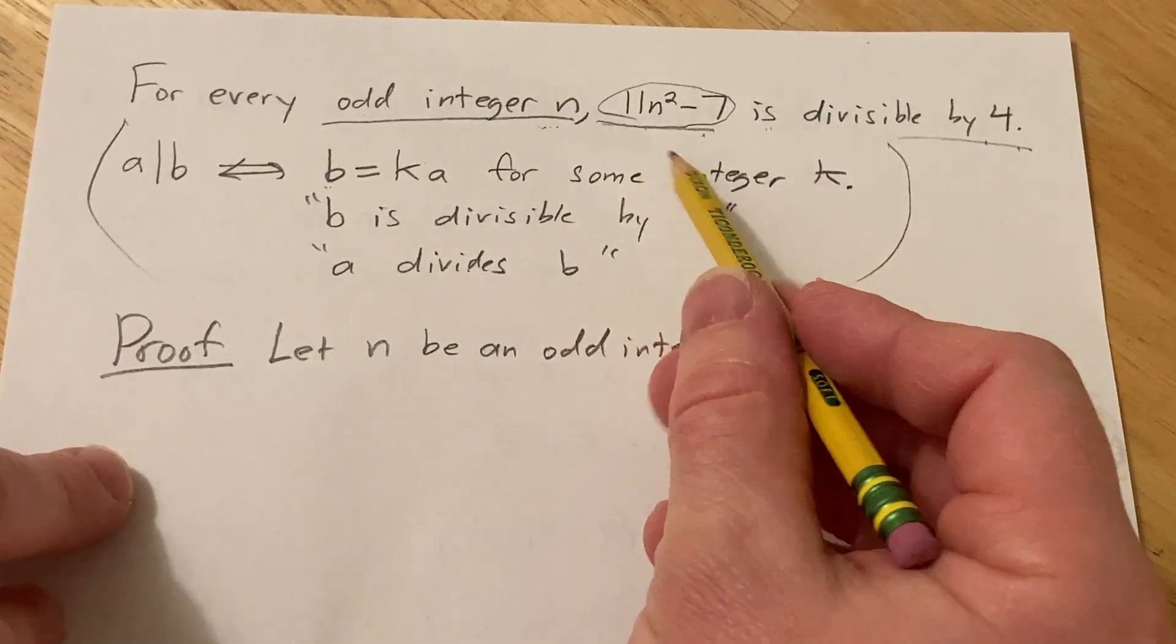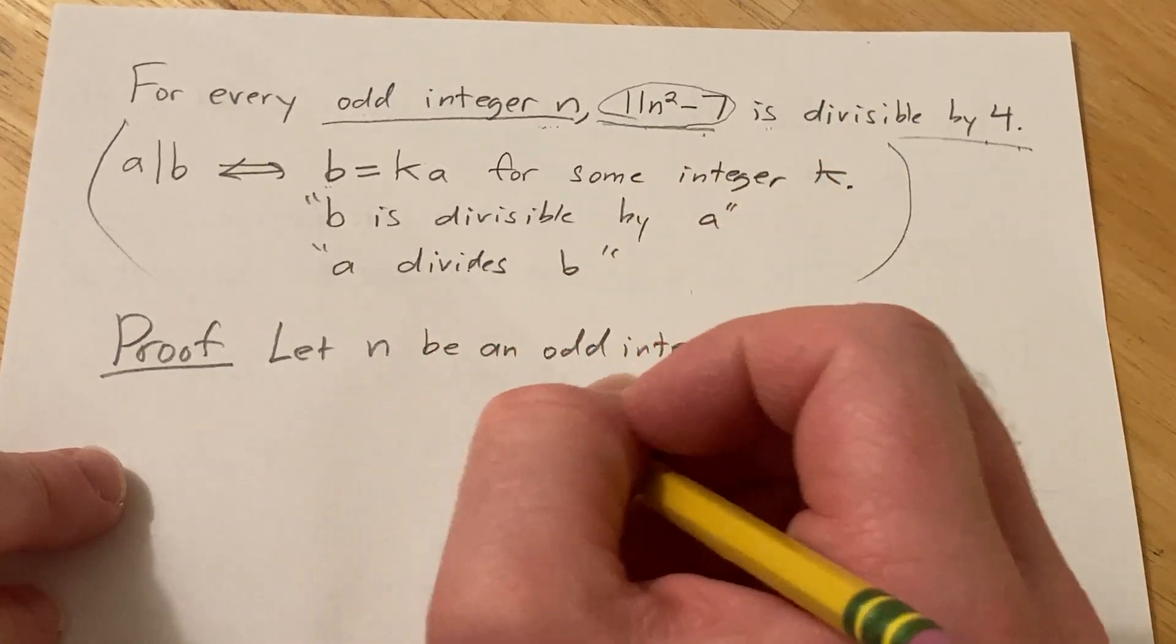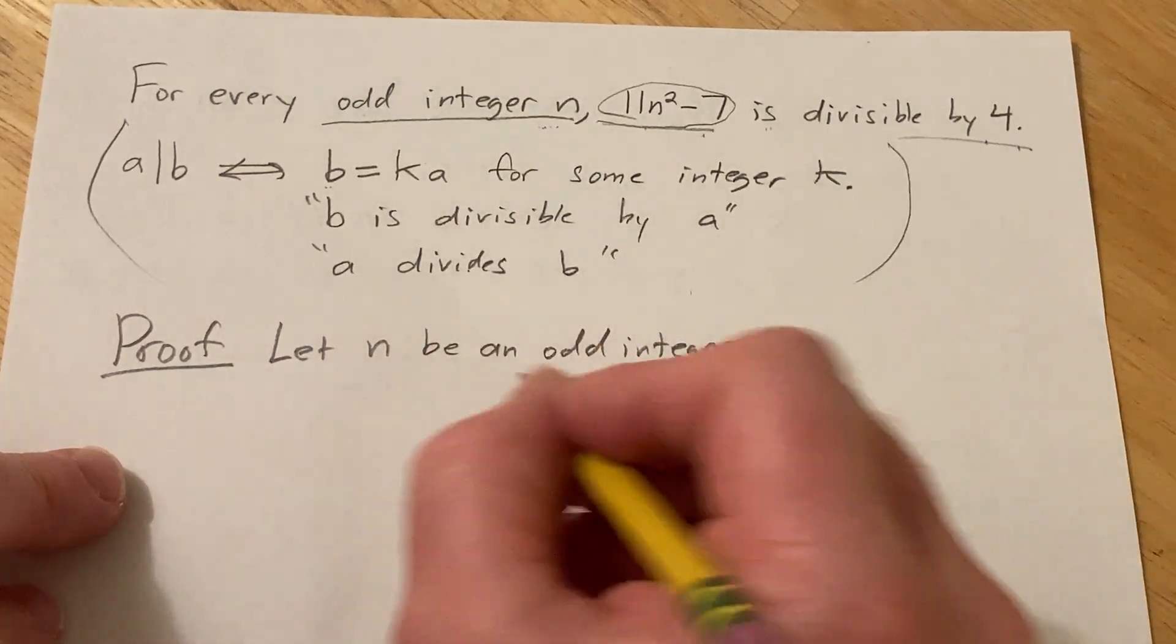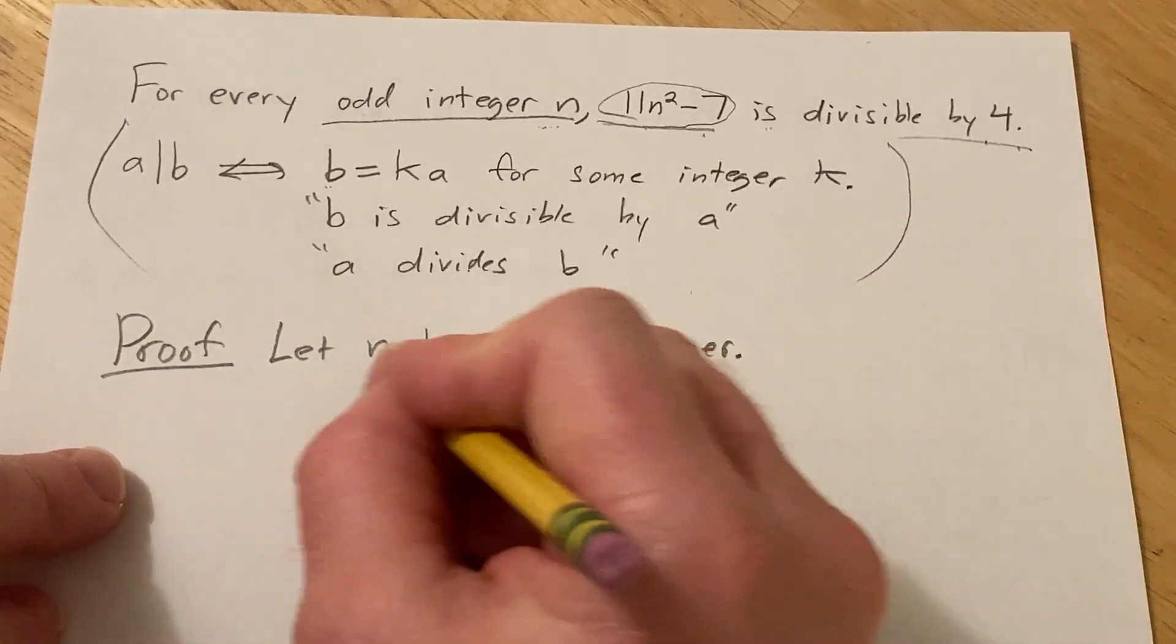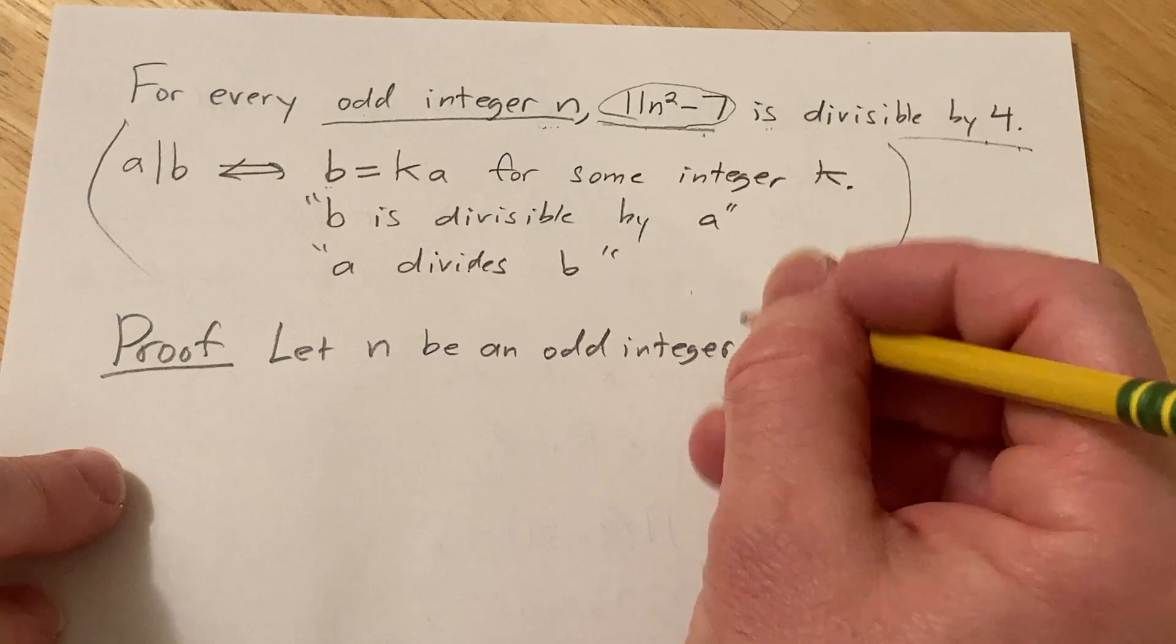So let n be an odd integer. And now we have to show that 11n² - 7 is divisible by 4. So in order to do that, we probably have to use the fact that n is odd. So what does that mean?